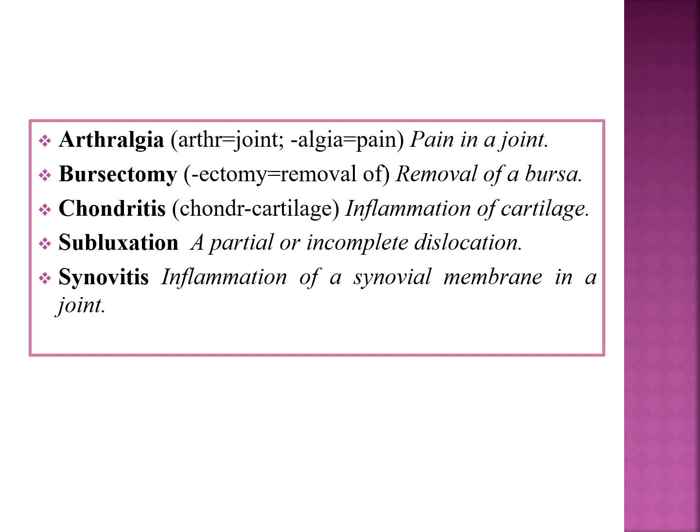Now let us see some disorders. Arthralgia: arthro means joint, algia means pain — so arthralgia means pain in a joint. Bursaectomy: ectomy means surgical removal, so bursaectomy means surgical removal of the bursa. Chondritis: chondro means cartilage, itis means inflammation — so chondritis is inflammation of cartilage.